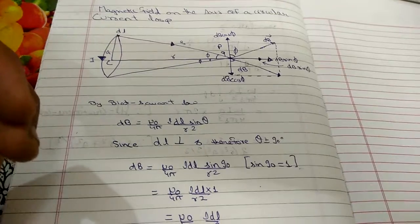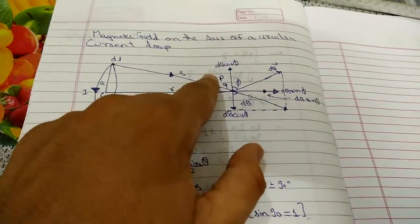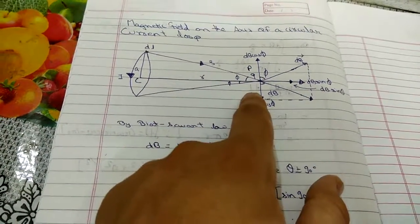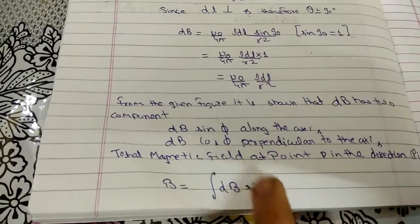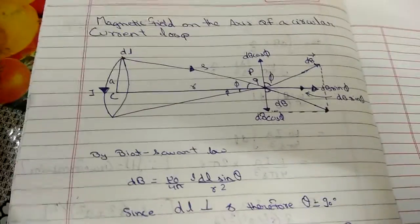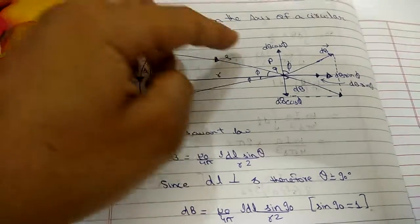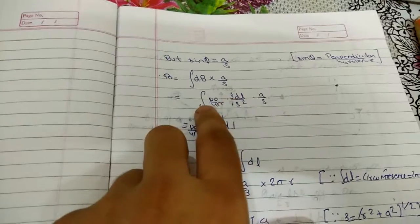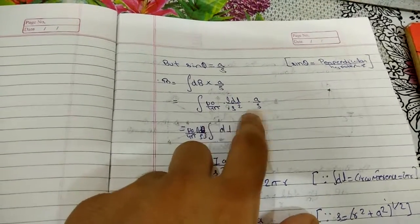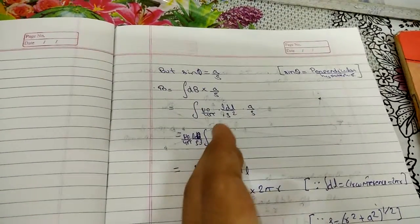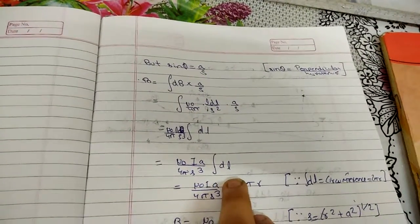We will integrate — that is, sum up — the magnetic field dB. Total magnetic field at point p along the axis cp is given as B is equal to integral of dB sin phi. We know that sin phi is equal to perpendicular upon hypotenuse, which is a by s. So B is equal to integral of dB into a by s. Putting the value of dB, that is mu0 idl upon 4 pi s squared, multiplied by a by s. The constant term mu0 a upon 4 pi s cubed comes outside. On integrating dl we get 2 pi r, since dl equals the circumference, which is 2 pi r.